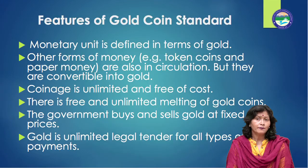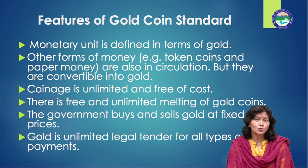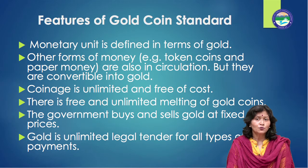Other forms of money are redeemable into gold. Features of gold coin standard: number one, the monetary unit is defined in terms of gold. For example, before World War I, the sovereign was the standard coin in the UK. Its weight was 123.17447 grains with 11/12 purity.